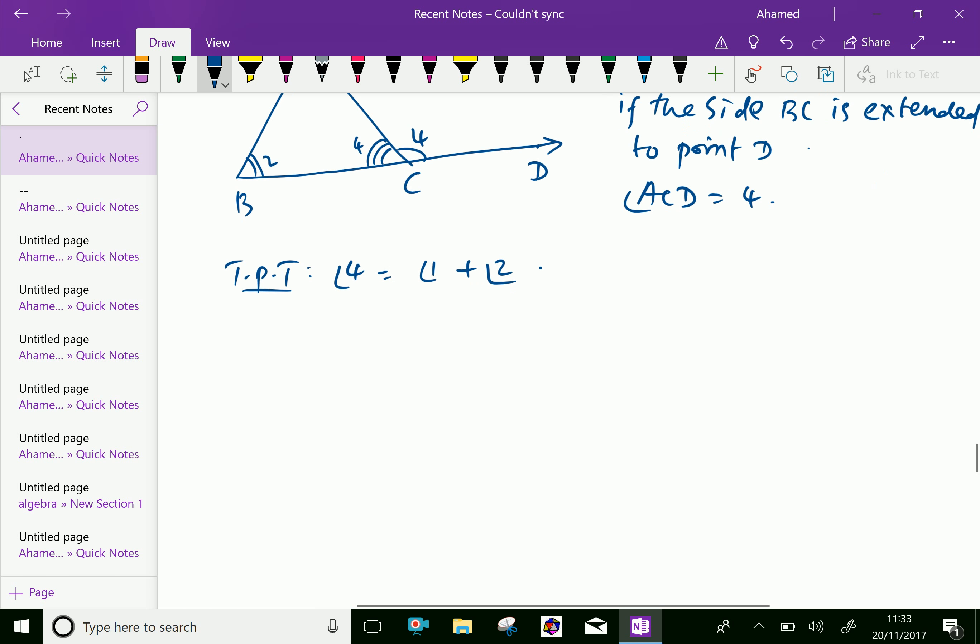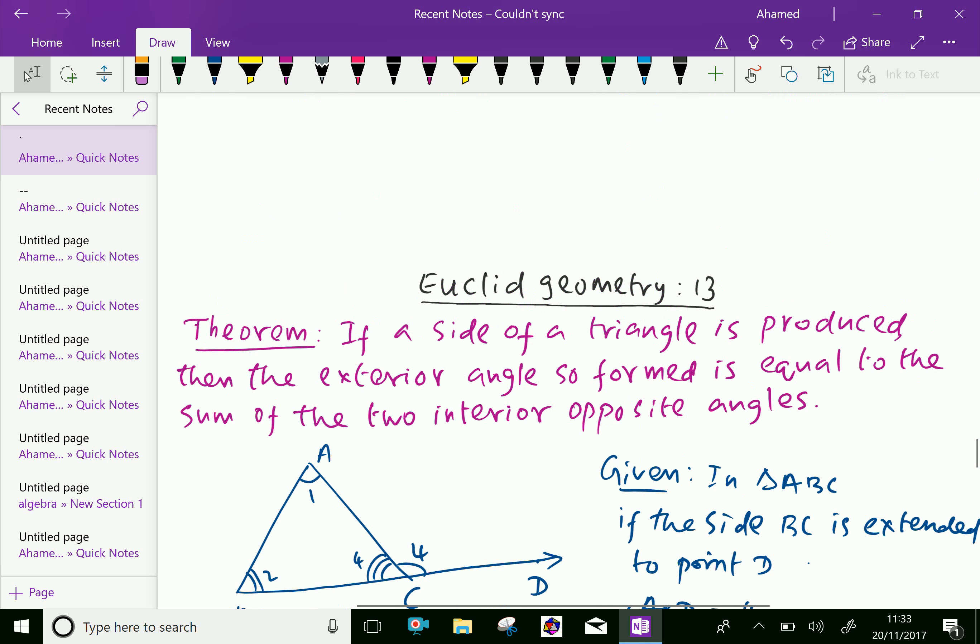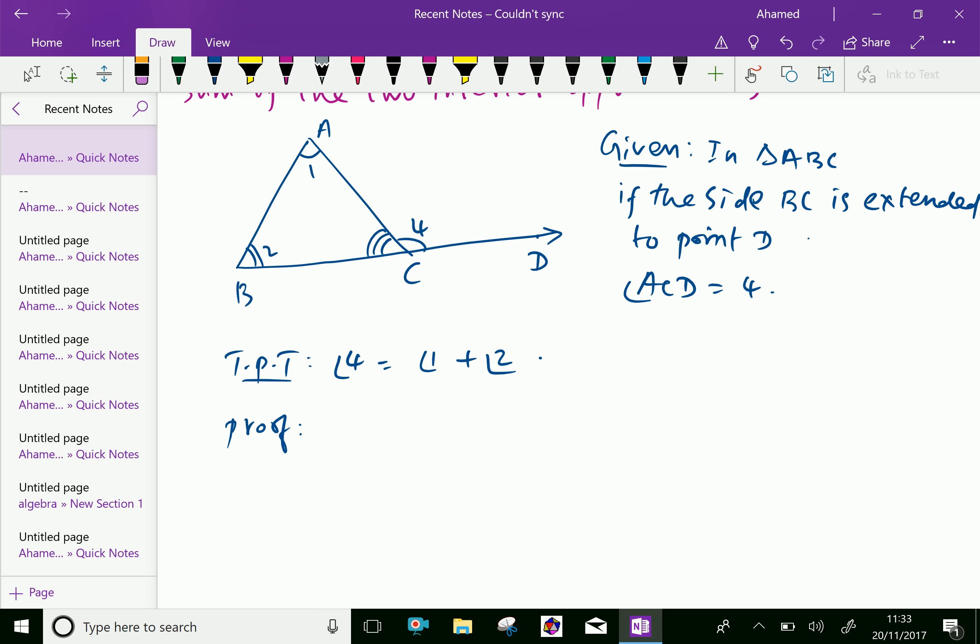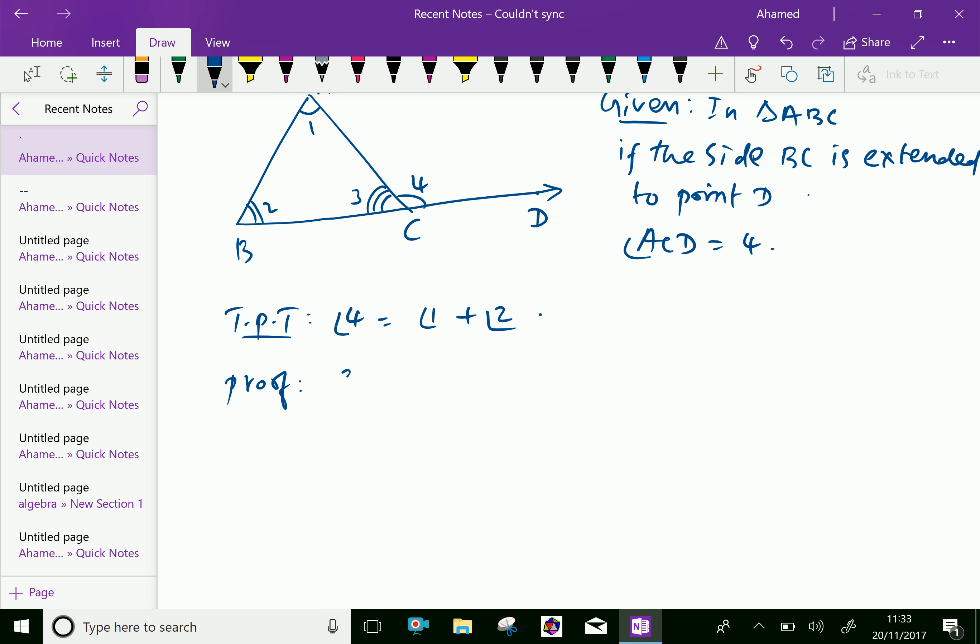Now, proof: we know that angle 3 plus angle 4 equals 180 degrees. The reason is linear pair; both angles are linear pairs.